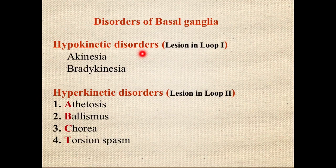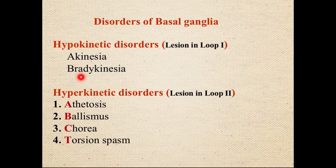Hypokinesia means reduced intensity of movement. Hypokinetic movements are of two types: either total absence of movement, or very difficult initiation of movement — that is called akinesia. The second type is bradykinesia, which means slowness of movement. Both akinesia and bradykinesia result from a lesion within the direct pathway.